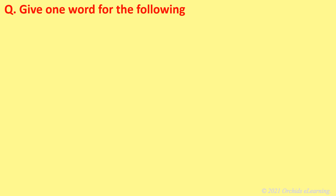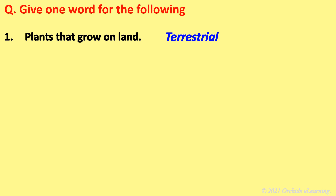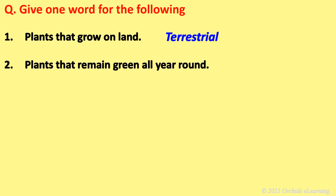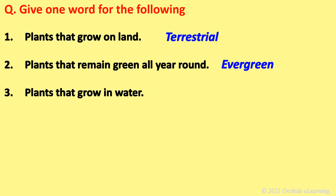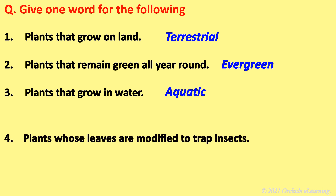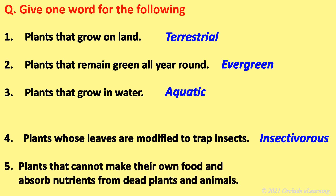Give one word for the following. Plants that grow on land: terrestrial. Plants that remain green all year round: evergreen. Plants that grow in water: aquatic. Plants whose leaves are modified to trap insects: insectivorous. Plants that cannot make their own food and absorb nutrients from dead plants and animals: non-green.